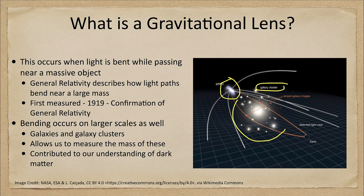This will cause the image to be distorted and to be much brighter than it otherwise would be. There can easily be cases where we would not even see this galaxy, but we can see the magnified, distorted images that have passed through the gravitational lens.